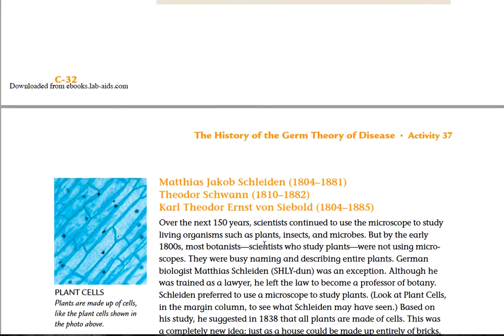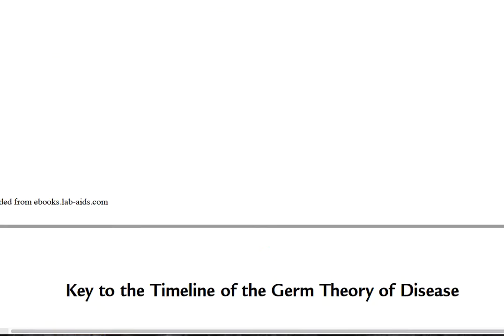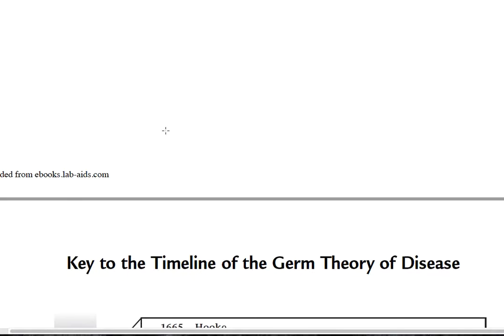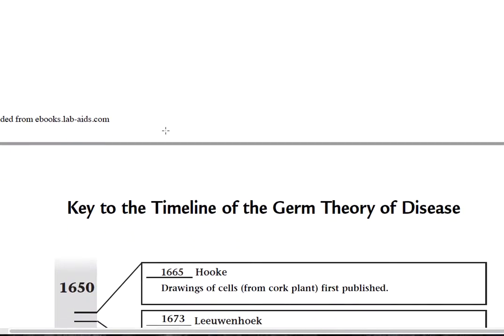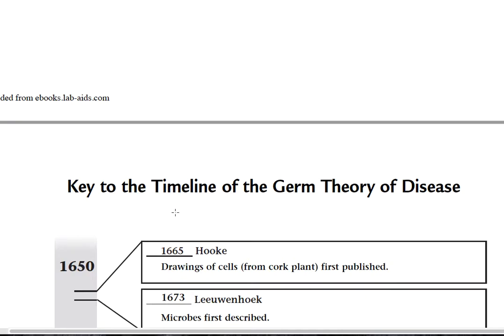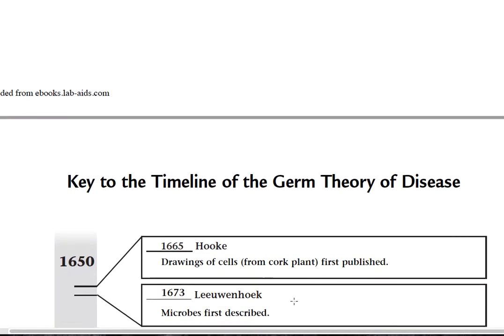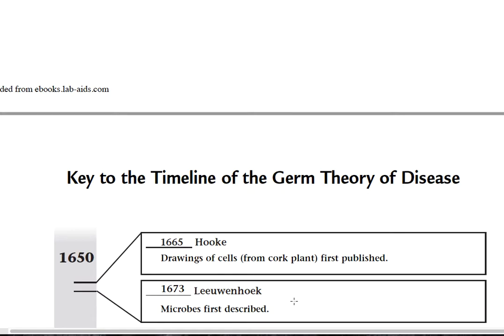Down to the next set of scientists — and we can go back to our key to the timeline of the germ theory of disease. We have Hooke in 1665: drawings of cells from cork plants first published. And Leeuwenhoek: microbes first described. He was the first scientist to observe microscopic life under a microscope and describe them.